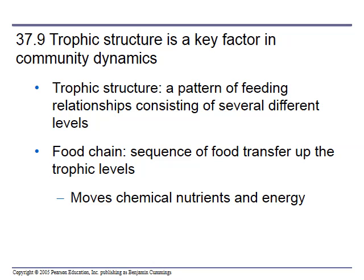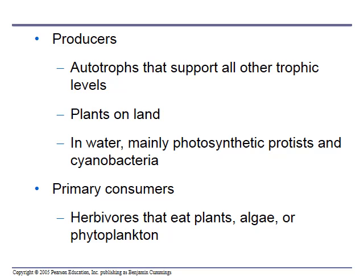Trophic structure is a key factor in community dynamics — a pattern of feeding relationships consisting of several different levels. We go up the food chain in a sequence of food transfer up the trophic levels: grass goes to cattle, goes to humans. Energy and nutrients move up. Producers are autotrophs — plants on land and photosynthetic protists and cyanobacteria in water — that take light energy and get it into the food chain. Then you have the primary consumers, which are the herbivores that eat the plants and algae, like cattle eating grass.